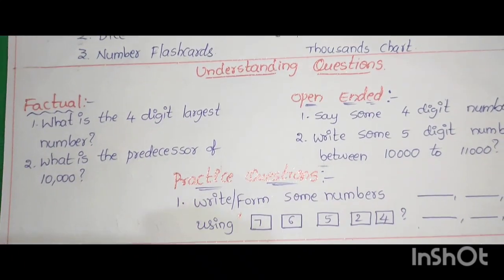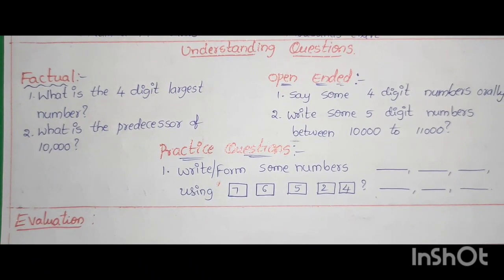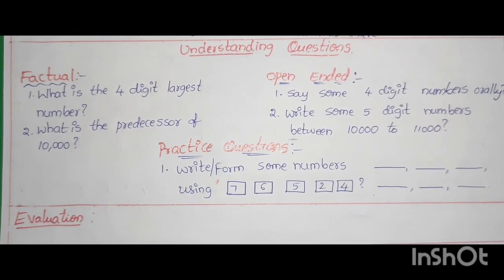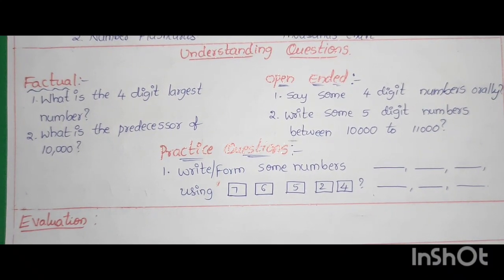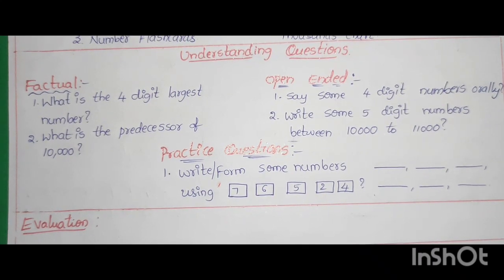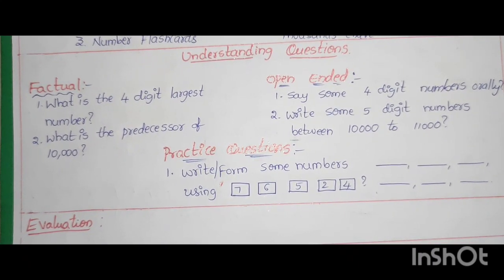Understanding questions. Factual: What is the 4 digit largest number? What is the predecessor of 10,000? Open ended: Say some 4 digit numbers. Write some 5 digit numbers between 10,000 to 11,000. Practice questions: Write or form some numbers using class cards 7, 6, 5, 2, 4.